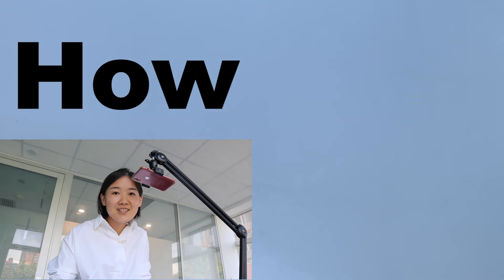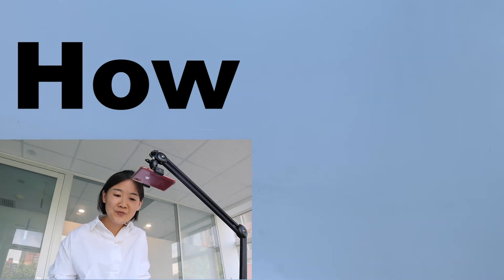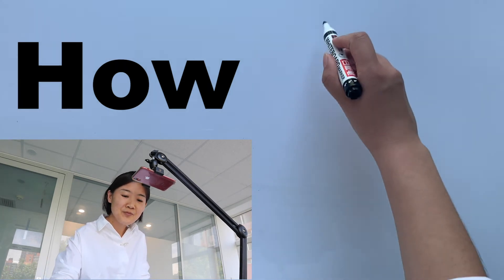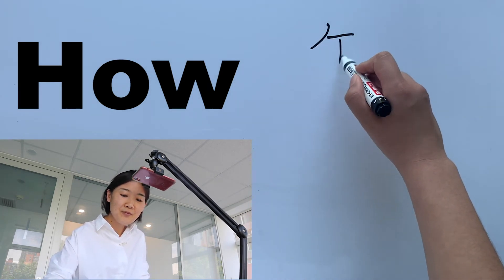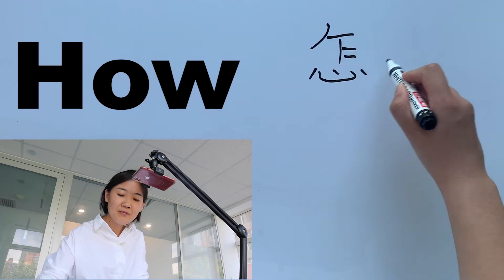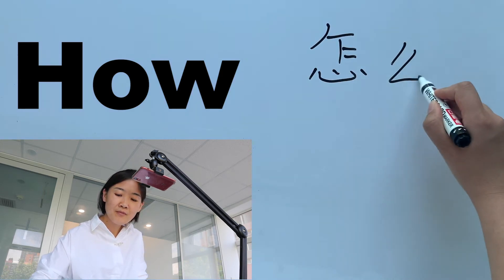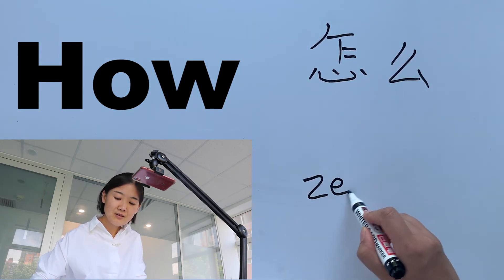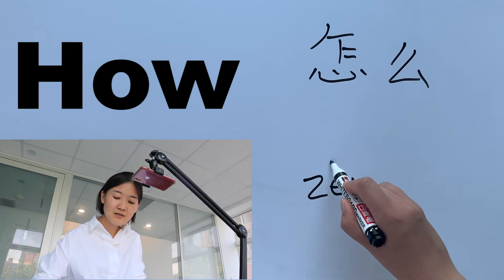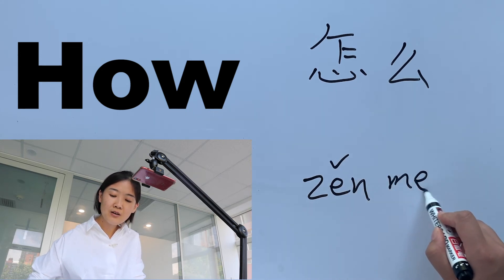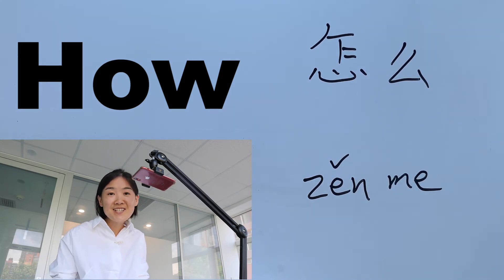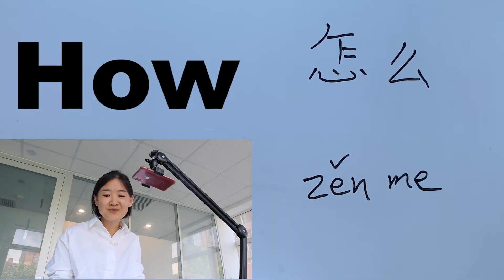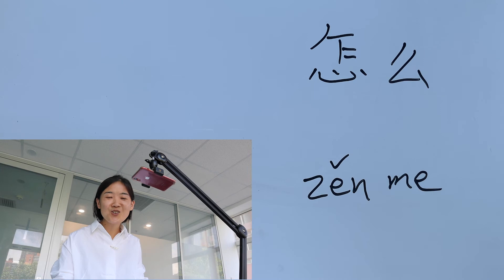The last one is 'how' — 怎么 (zěn me). 怎么? 你怎么样? These are all the questions in Chinese.